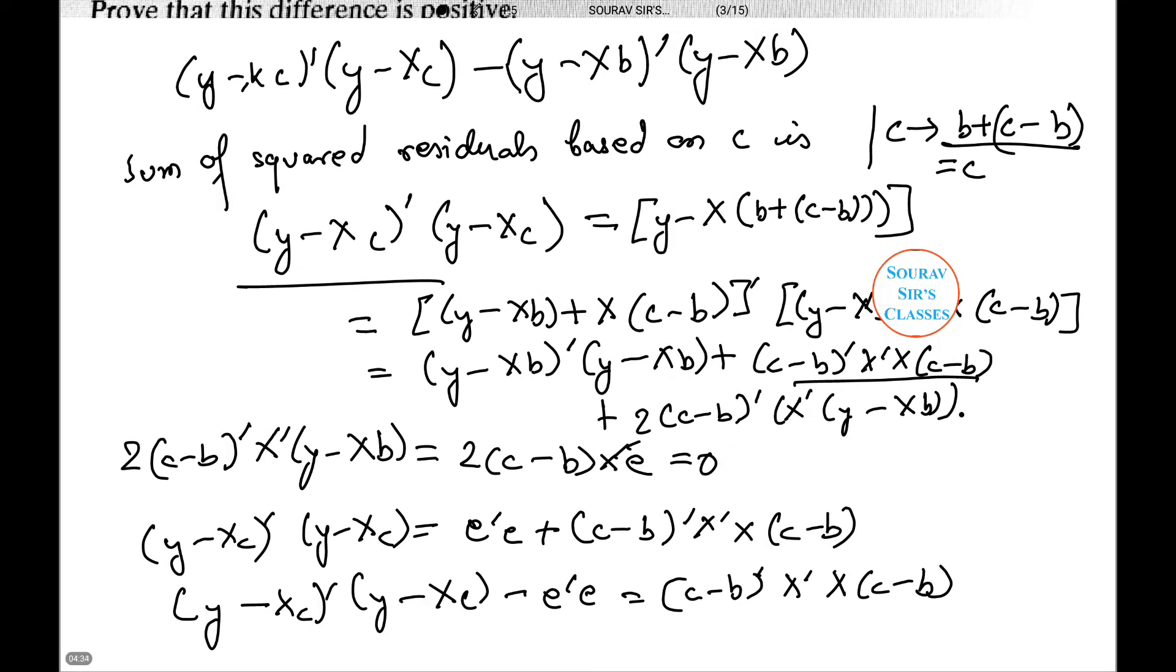And write (y - Xb)' (y - Xb) minus (y - Xc)' (y - Xc) equals (c - b)' X'X (c - b). The right hand side can be written as d'd where d equals X(c - b), so it is necessarily positive. This confirms what we knew at the outset: least squares is least squares.